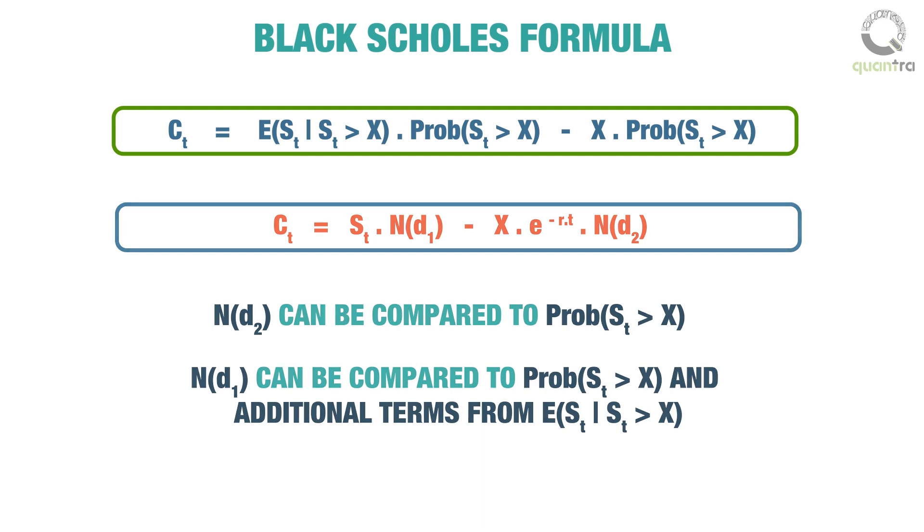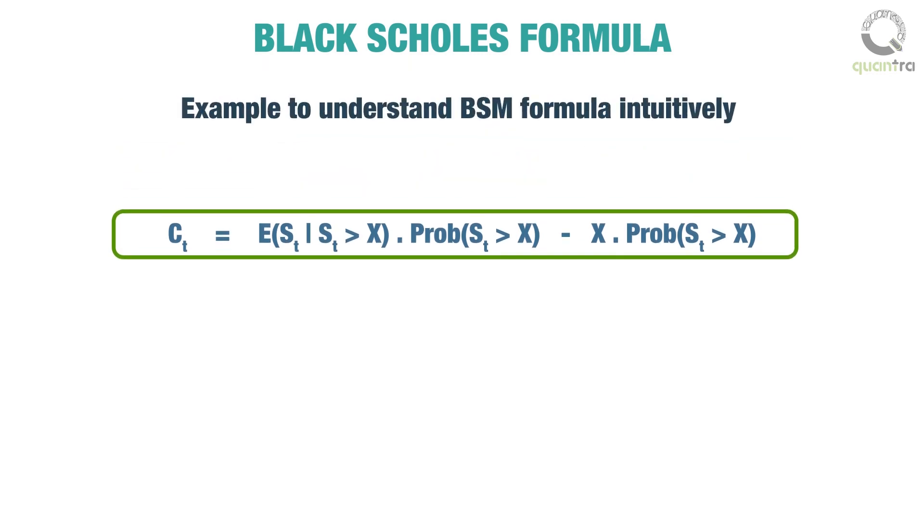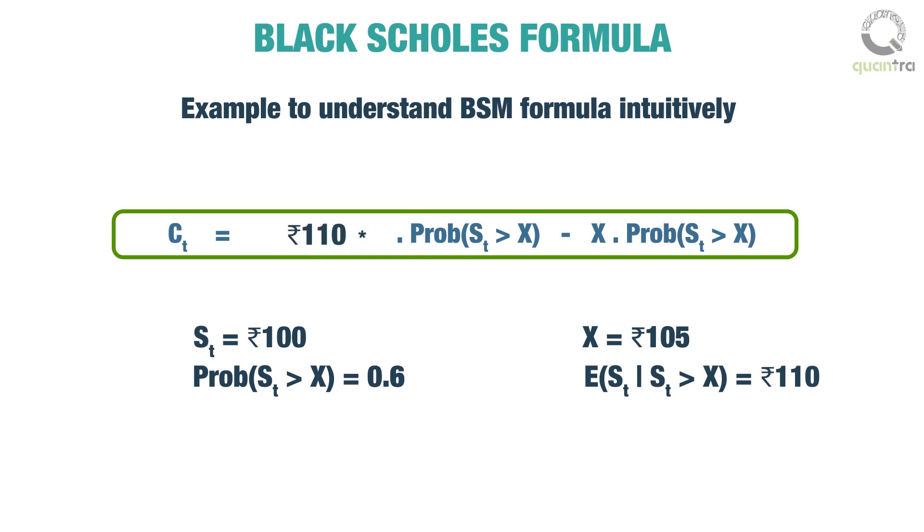Let us look at an example to understand intuitively how the BSM formula works. Assume that stock for company ABC is trading at 100 rupees and that we are the option writers interested in selling a call option on stock ABC at a strike price of 105 rupees expiring one month from now. Assuming that probability of the option being in the money at the time of expiry is 0.6 and the expected value of the stock price given that the stock is in the money is 110 rupees.